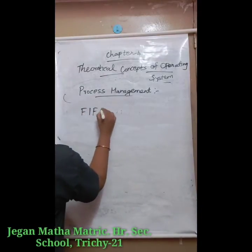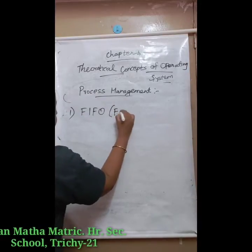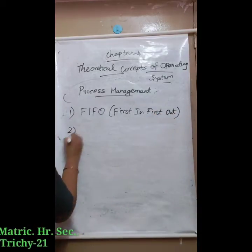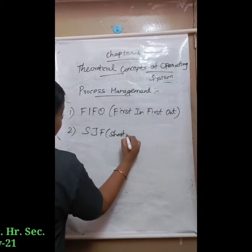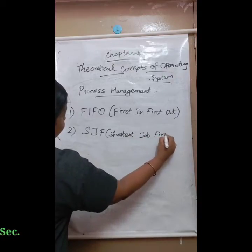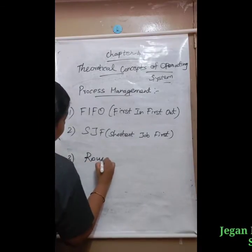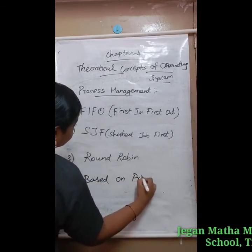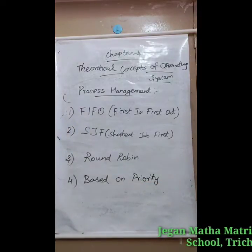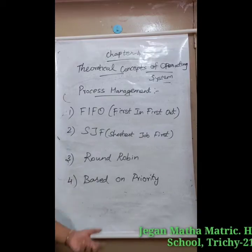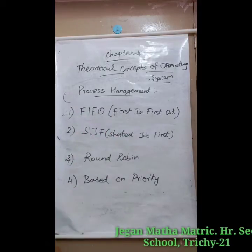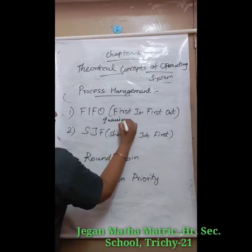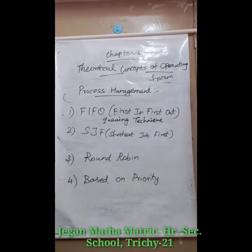The first one is FIFO — that is First In, First Out. The second one is SJF — that is Shortest Job First. The third one is Round Robin, and the fourth one is based on Priority. The FIFO algorithm is based on a queuing technique.